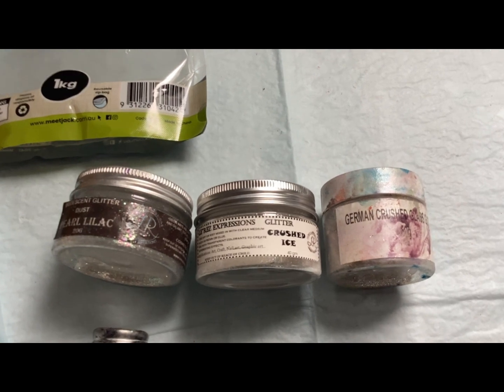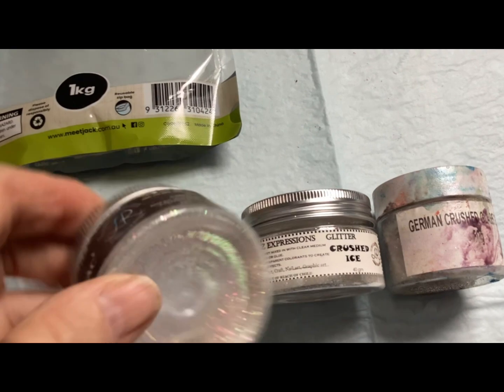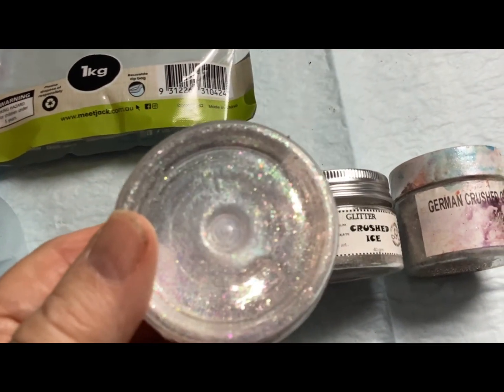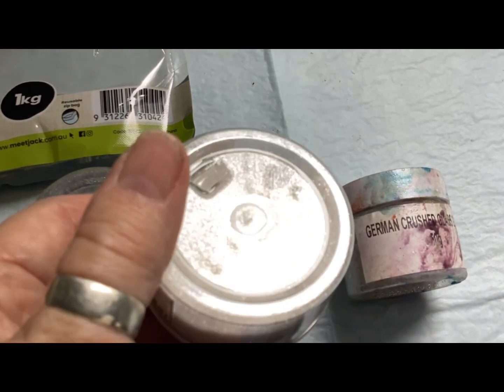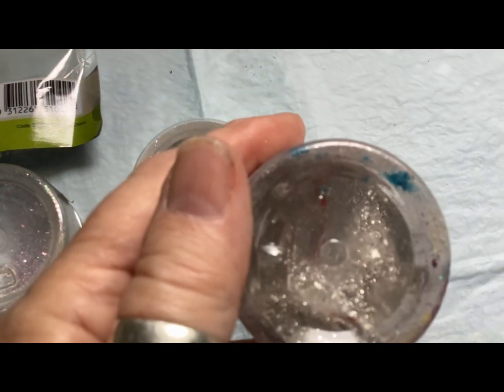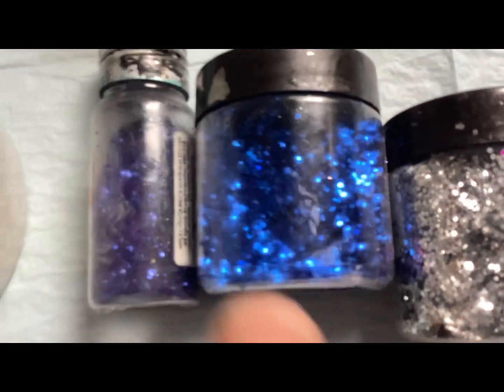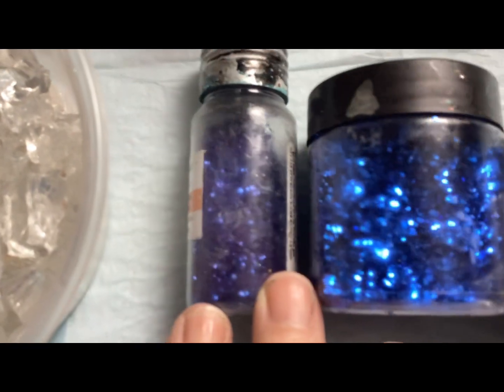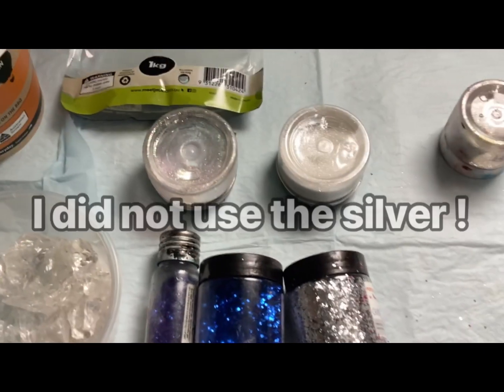These are the assortment of glitters I'm going to use. Three of them are from L'Oréz Expressions - Pearl Lilac, Crushed Ice, and German Crushed Glitter. The other ones are an assortment from a dollar shop - some blues, a blue violet color, and some silver.